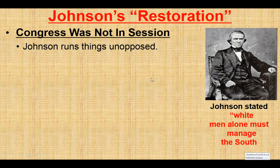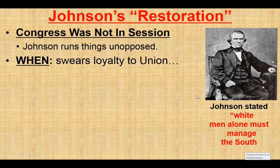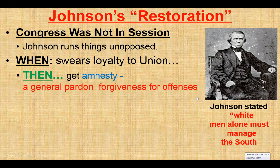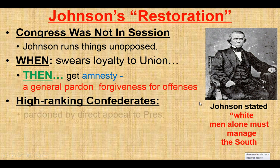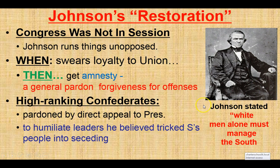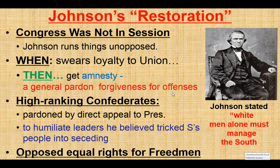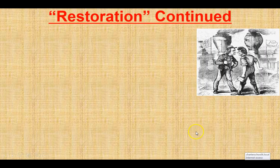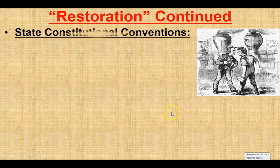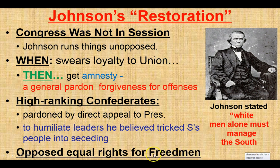Johnson's plan is called the Restoration. If you think about an old car, you restore it — it's basically the same as it came out of the factory. Not a lot of changes, other than there's no slavery. Congress was not in session when he took office and instituted his restoration plan. When a person swears loyalty to the Union, they can get amnesty and a general pardon. High-ranking Confederate officers could get this pardon as well, but they had to go directly to the president — he wanted to make them grovel and humiliate them. But he opposes equal political rights for freedmen.